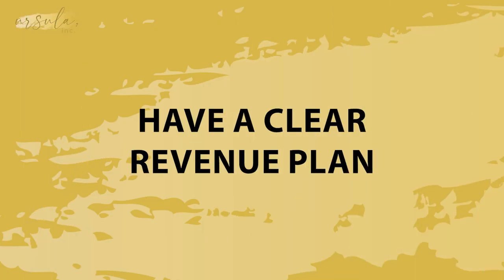First, you want to have a clear revenue plan. You want to have a 12-month plan that shows you exactly how much revenue you're going to bring in every single month. And you don't want that revenue plan to be stagnant. If you're at $20,000 a month, you wouldn't stay at $20,000 for the entire year unless you planned on your business not growing. So maybe it starts at $20,000, then $25,000, then $30,000 — you can see this revenue plan showing how your revenue is going to grow over time.